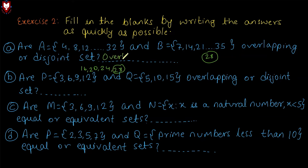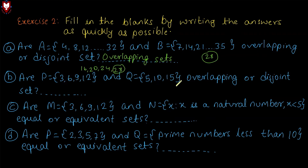We fill in the blanks: overlapping sets. Then question B: set P equals to 3, 6, 9, 12, and set Q equals to 5, 10, 15 — overlapping or disjoint sets? Here, set P and set Q — 3 and 5 are different multiples, so there are no elements in common. So these two sets are disjoint sets.